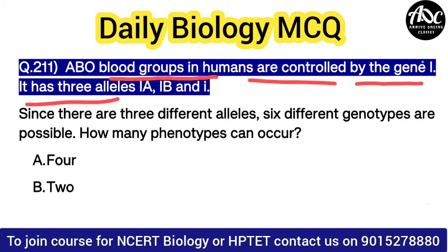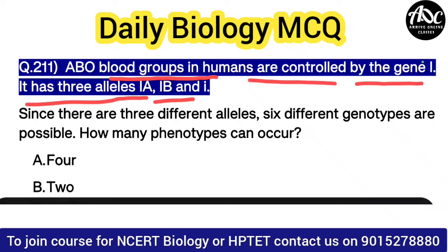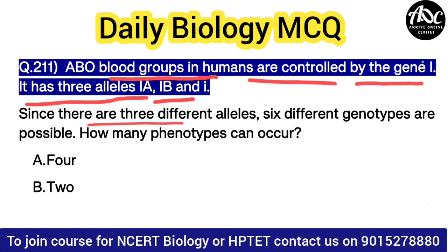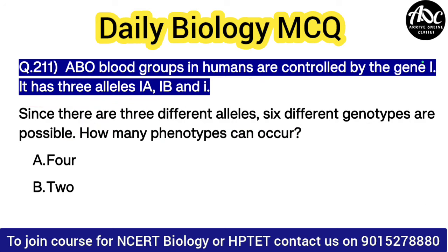It has three alleles: Ia, Ib, and small i. Since there are three different alleles, six different genotypes are possible. How many phenotypes can occur?